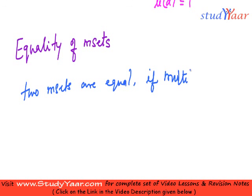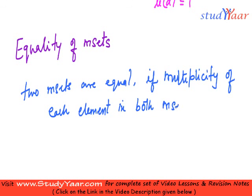Now, let us understand the concept of equality of multisets. Equality of multisets also known as m-sets. So, we say that 2 multisets are equal, I am going to write over here, 2 m-sets are equal if multiplicity of each element in both the multisets are equal. If multiplicity of each element in both m-sets is equal.